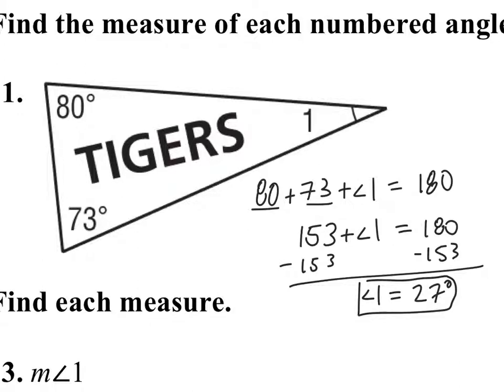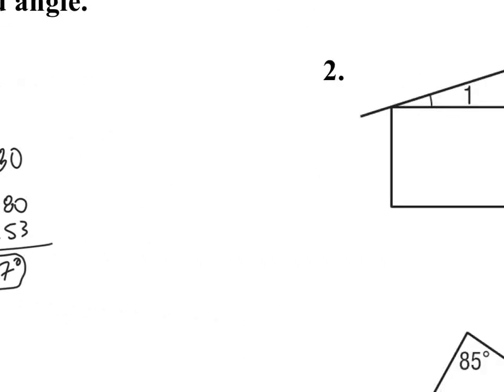If I subtract 153 from both sides, I get that angle 1 is equal to 27 degrees. So I'm looking at a picture, drawing conclusions, and knowing that all angles add up to 180, I set up an equation and solve for the angle.